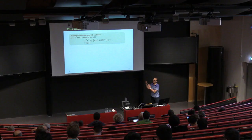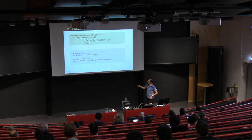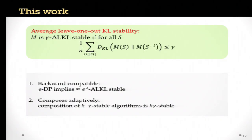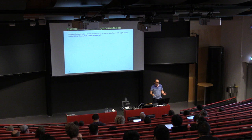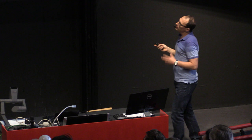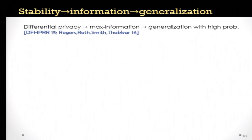This notion has several key properties. First, it is backward compatible: epsilon differential privacy implies epsilon squared stability. It also composes adaptively — the composition of k algorithms each gamma-stable is k-gamma stable. Most interestingly, this notion implies generalization. To prove this, they follow a general approach: they show that this stability notion implies a bound on mutual information between the data set and the output of the algorithm, specifically that for any data set drawn IID from distribution P, the mutual information is upper bounded by gamma times n.